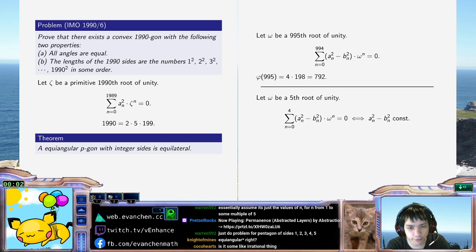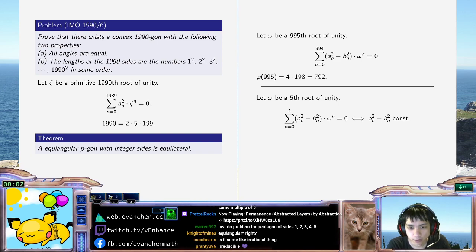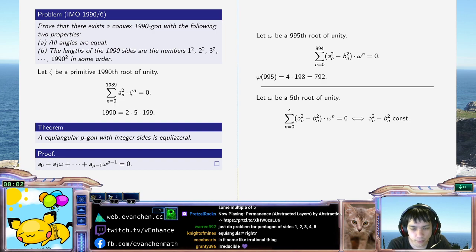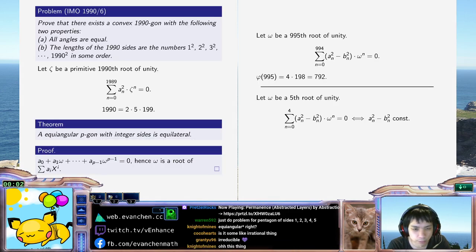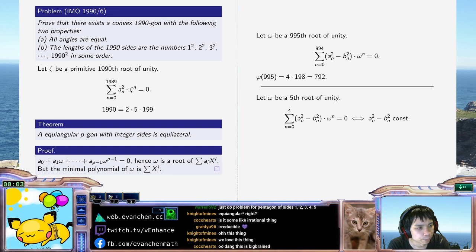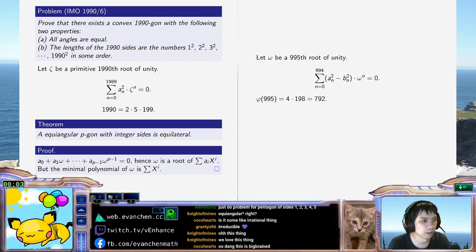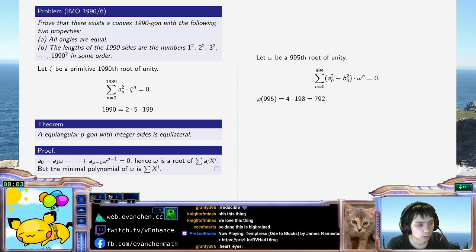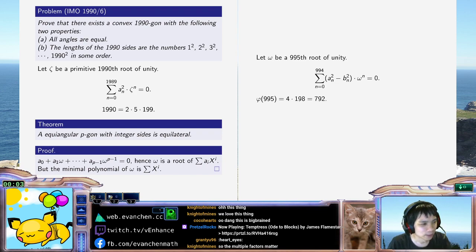What happens is you have a_0 plus a_1 x... you get the coefficients up to p-1 of omega to the p-1 equal to 0. So omega is a root of some sum of a_i x^i. But the minimal polynomial of omega has the same degree, so we require it to be equilateral. So for 5, it's just not true. And what the problem is saying is: because we have 995, which is not prime — it is 4 times 198, which is 792 — the problem is possible. Although I don't know how to construct it yet, it's not obviously impossible. 995 being not prime is what's going to make this problem doable.